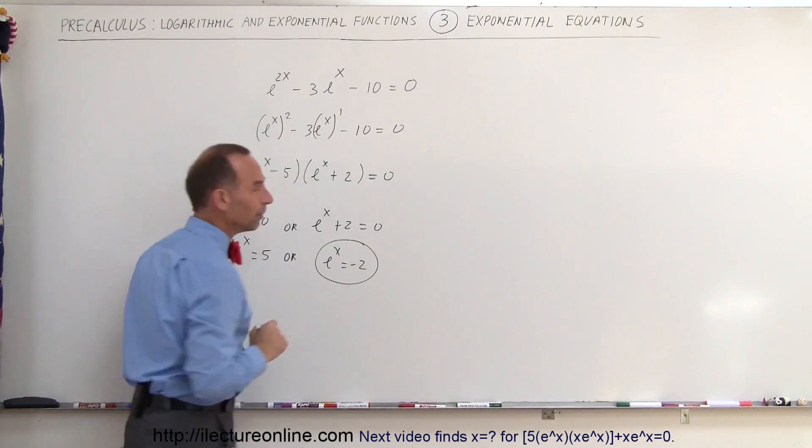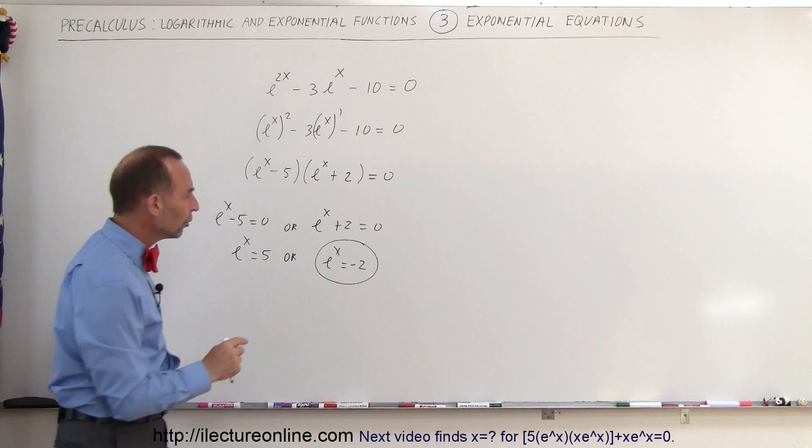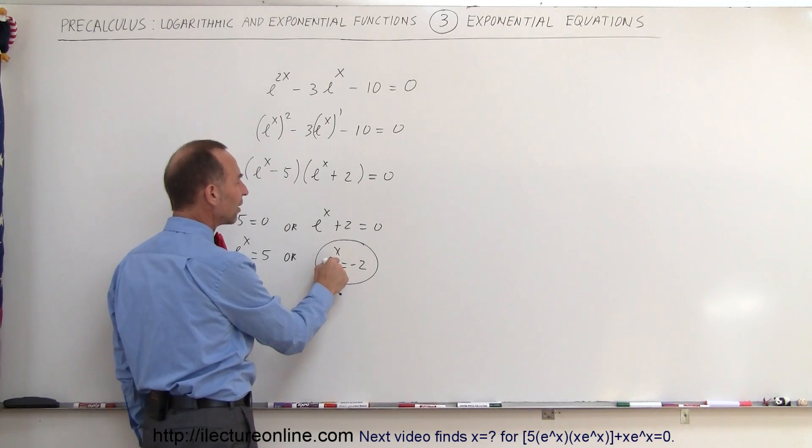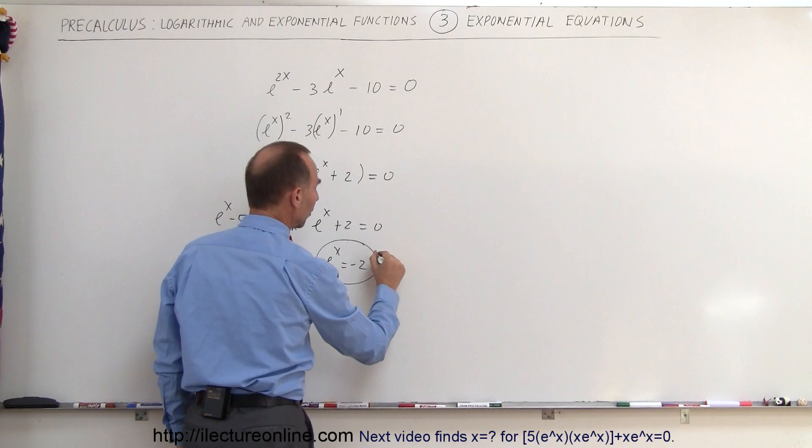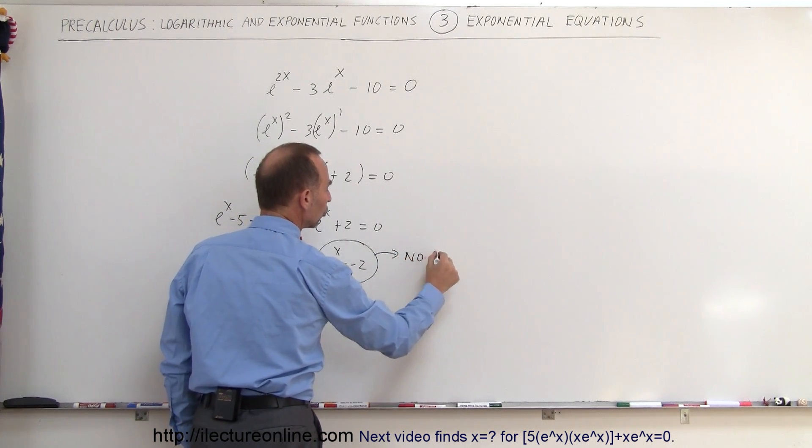Now here we have a problem, because there's no way you can go e to the x, no matter what the value for x is, and get a negative number. So this results in no solution.